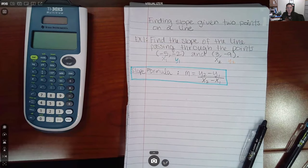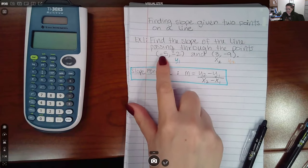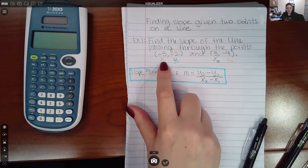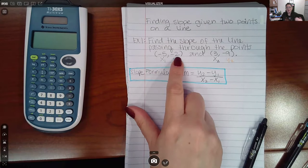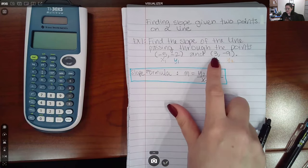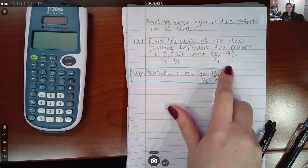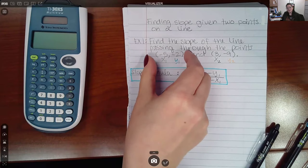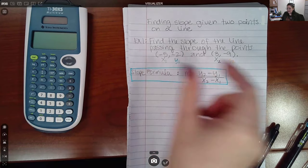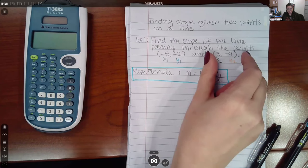The letter represents the place that number is in. So this number is in the first spot, which is an X coordinate. This number is in the second spot, which is the Y coordinate. Similarly, first spot X coordinate, second spot Y coordinate. But these have ones because they're coming from the first point, and these have twos because they're coming from the second point.